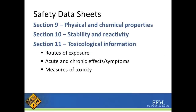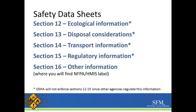Section nine is the physical and chemical properties. Section ten is the stability and reactivity of the chemical. Section eleven is the toxicological information, including the routes of exposure, the acute and chronic effects and symptoms, and the measures of toxicity. Section twelve is the ecological information. Section thirteen is disposal considerations. Fourteen is transport information, and section fifteen is any other regulatory information. Note that OSHA will not enforce sections twelve through fifteen since other agencies regulate this information.